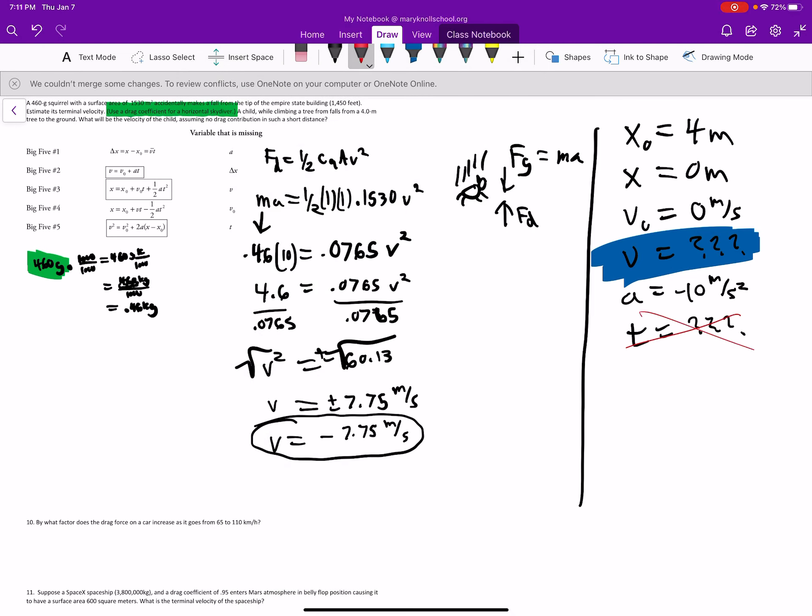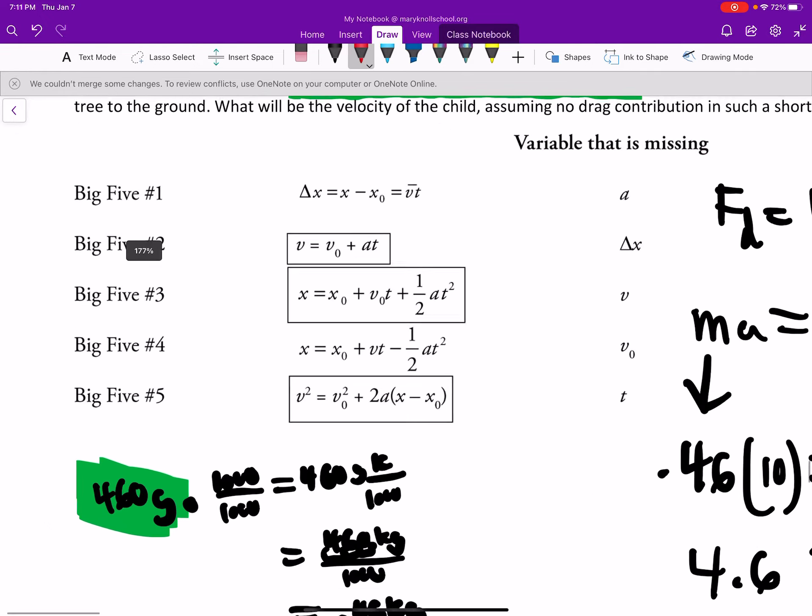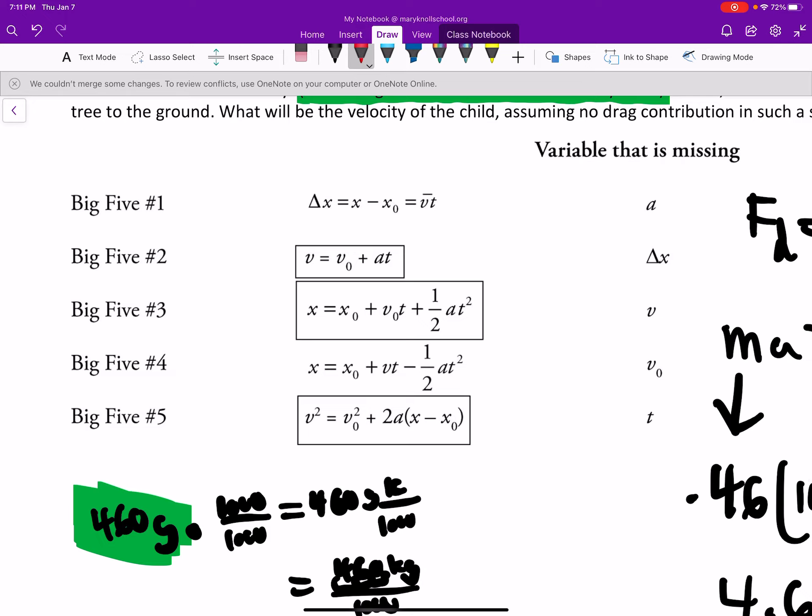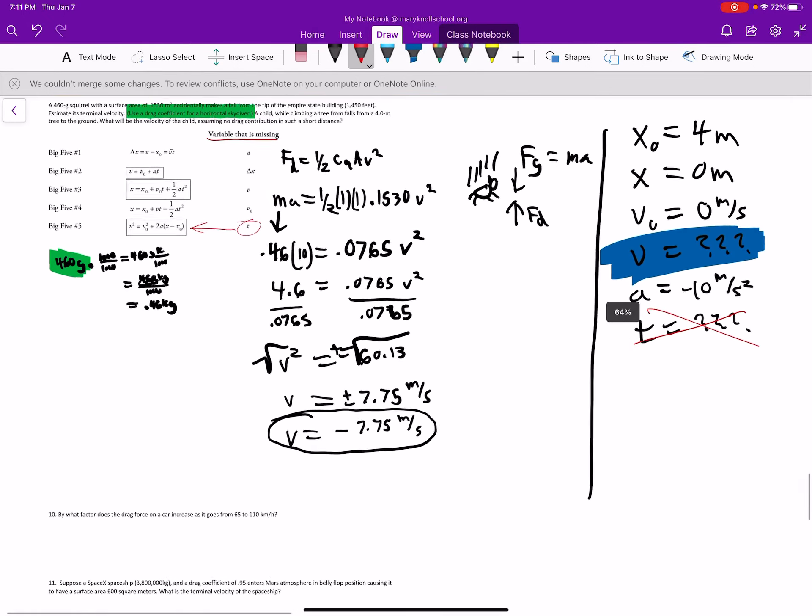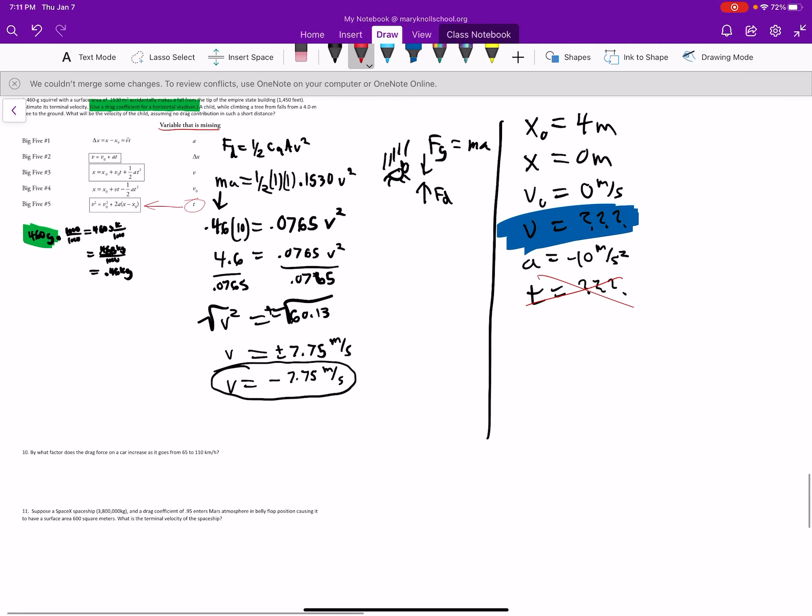So not that one. So when we look at the equations, we want that variable to be missing. We want the T to be missing. So let's go ahead and look here and find out which one is missing. Right there. It's missing there. So we want this equation. Okay. So let's put the equation down.